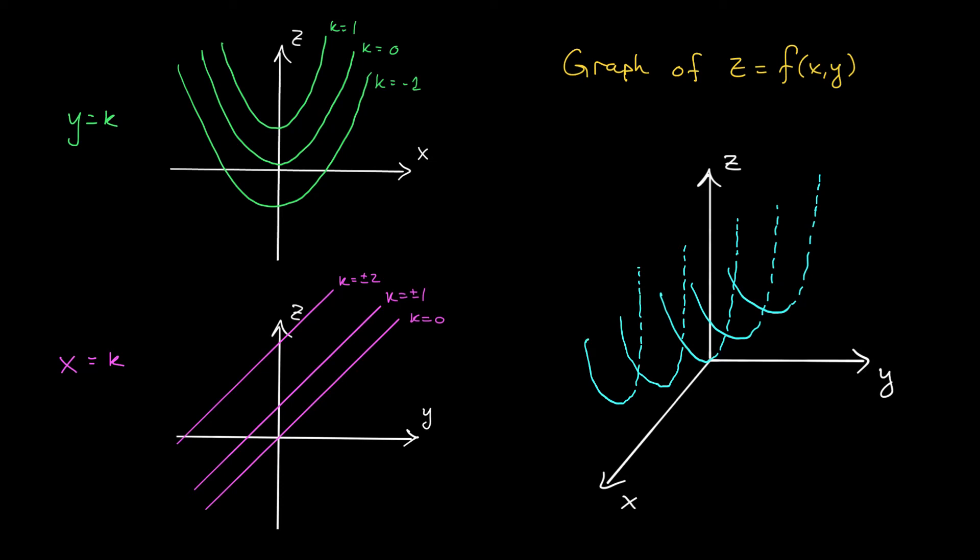It looks sort of like a slightly rolled up newspaper. It's open at the top, but it forms this sort of parabolic sheet as we move along the y-axis. I'm actually going to shade it a little bit here so you can see the inside versus the outside of our graph.